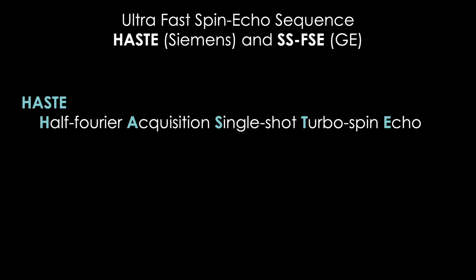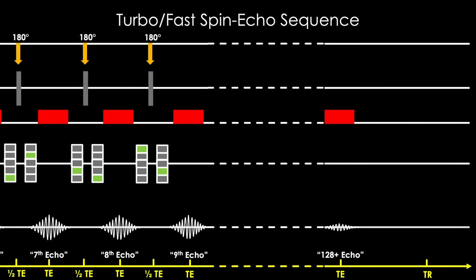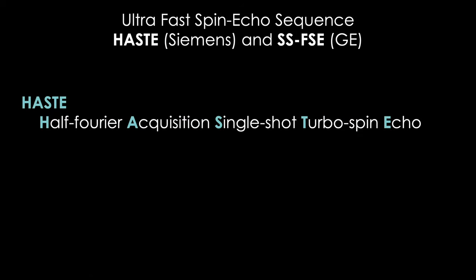but also employs a trick taking advantage of the fact that there is a certain symmetry to our raw acquired data, what people call k-space. So we acquire slightly over half of our usual echoes. Why you see this last data point labeled 128 plus. And then believe it or not, we're able to make an educated guess what the remaining data points are and synthesize them numerically.